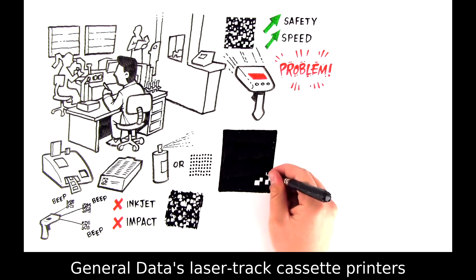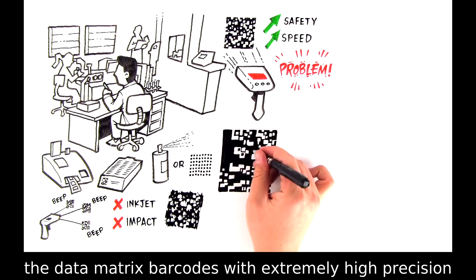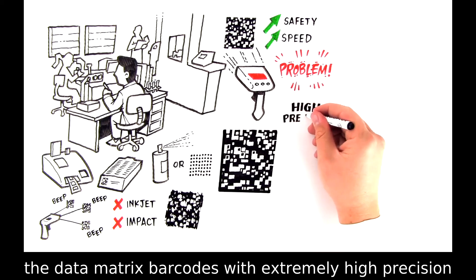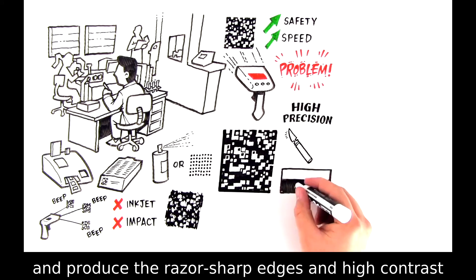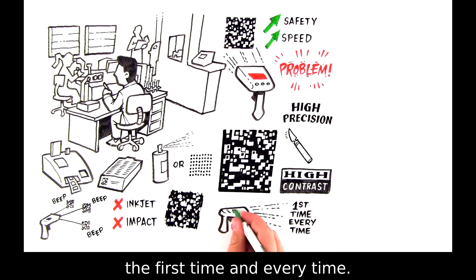General Data's LaserTrack cassette printers use laser printing technology to draw the data matrix barcodes with extremely high precision and produce the razor-sharp edges and high contrast that a scanner needs to read the barcode the first time and every time.